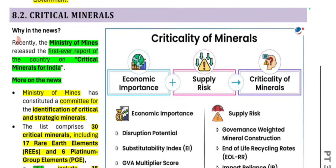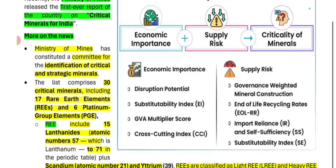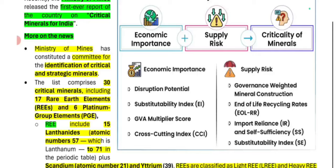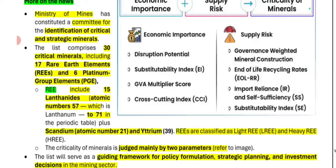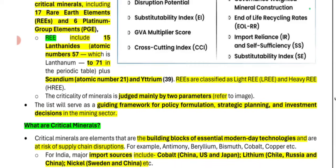This is all about the Mines and Minerals Act. Next, we have critical minerals. The Ministry of Mines has released the first report on critical minerals for India. The Ministry of Mines formed a committee to identify critical and strategic minerals, and the list contains 30 critical minerals, which include 17 rare earth minerals and 6 platinum group elements.